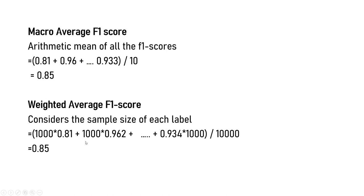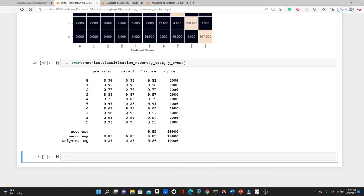Here is how the weighted average F1 score is calculated: sample size for label 0 is 1,000 and F1 score is 0.81, so 1000 × 0.81; plus sample size for label 1 is 1,000 and F1 score is 0.962, so 1000 × 0.962; and so on for all labels. For label 9, F1 score is 0.934 times 1,000, divided by the total sample size of 10,000, giving 0.85. You can calculate macro average and weighted average precision and recall the same way — for macro average, simply take the arithmetic mean of all precision values, and similarly for recall.